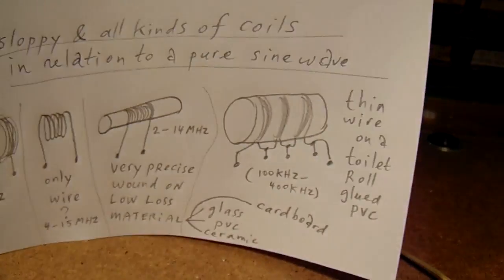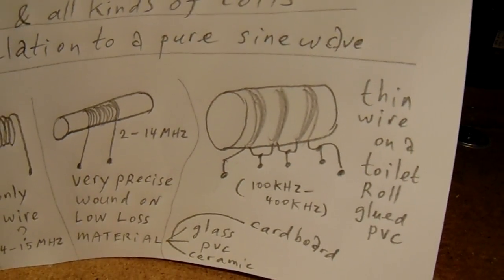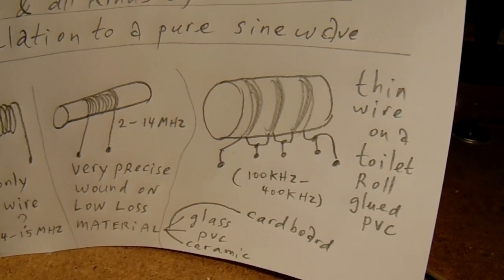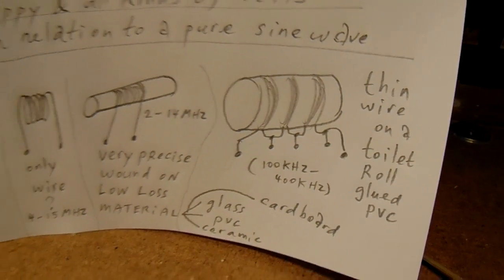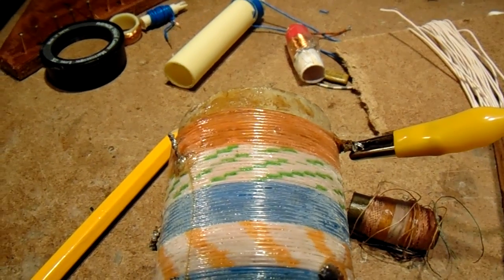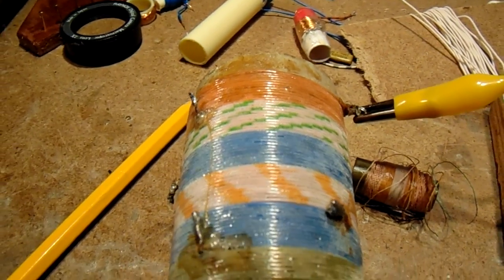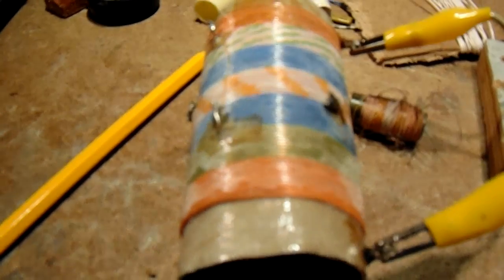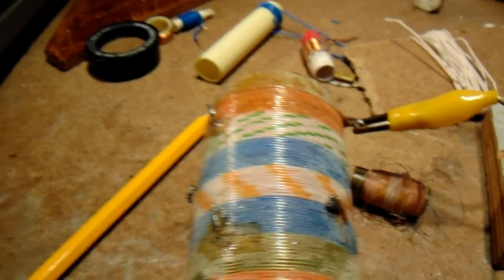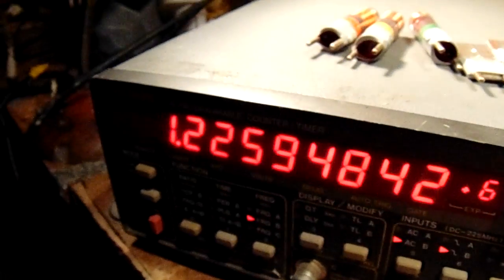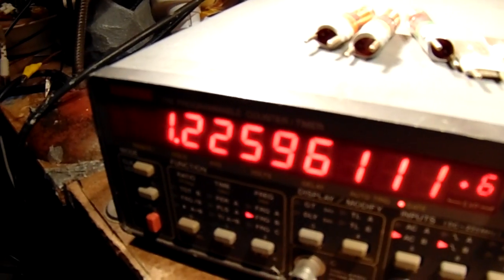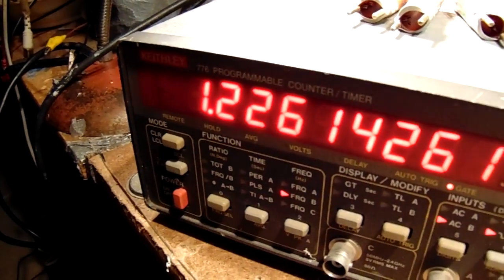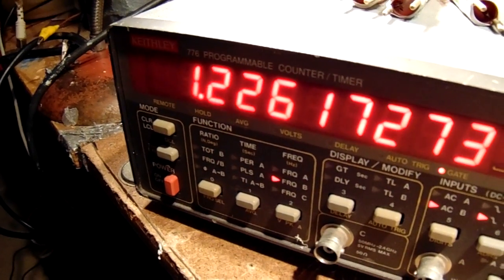Here is the first coil that we are going to test, a coil made for 100 kilohertz up to 400 kilohertz, wound on a toilet roll, glued with glue for PVC. This coil reads when I put the switch from the oscillator into a certain position, 1.2 megahertz.